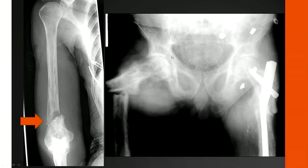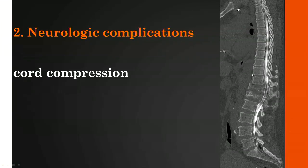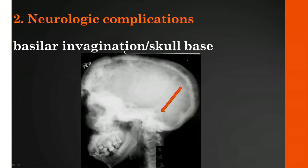Some fracture complications of Paget's can be fairly severe. If the fracture occurs in the spine, these are compression pathologic fractures that can cause cord compression and nerve root impingement, resulting in neurologic complications. And if the skull base is involved, basilar invagination can occur—something to watch out for in Paget's disease.